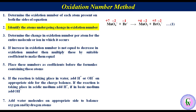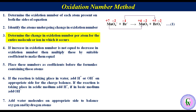Step number 2: Identify the atoms undergoing change in oxidation number. Here, the oxidation number of Mn is changing from +7 to +4, while the oxidation number of bromine is changing from −1 to +5. Step number 3: Determine the change in oxidation number per atom. The change in oxidation number of Mn is −3, while the change for bromine is +6.